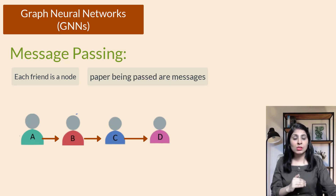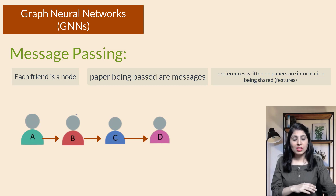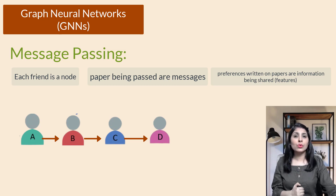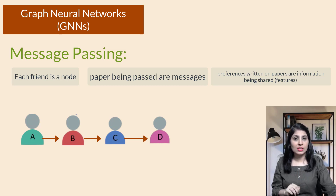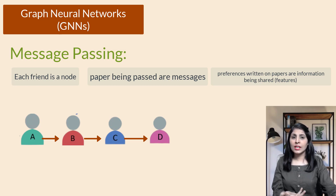In this example, each friend represents a node in a graph, the paper being passed between them are the messages, and the preferences written on the paper are the information being shared and updated through message passing. Similarly, in a graph neural network, each node sends messages to neighboring nodes, and those nodes update their own representations based on the received messages. This process iterates until each node has received and processed messages from all its neighbors.